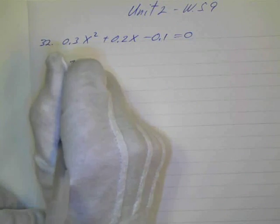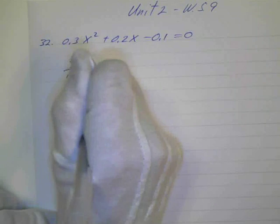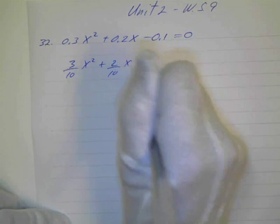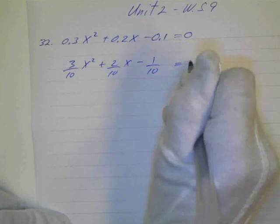If you have trouble seeing that, you can rewrite this as 3 over 10 x squared plus 2 over 10 x minus 1 over 10 equals 0.